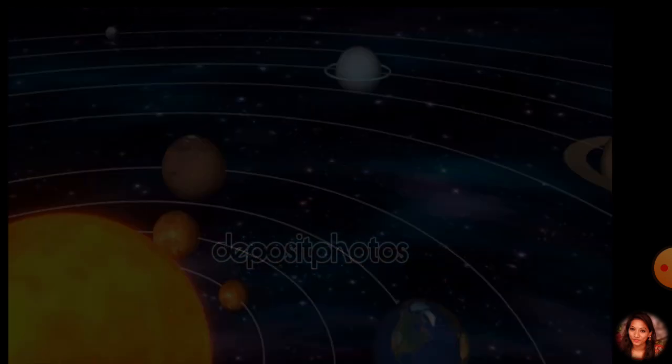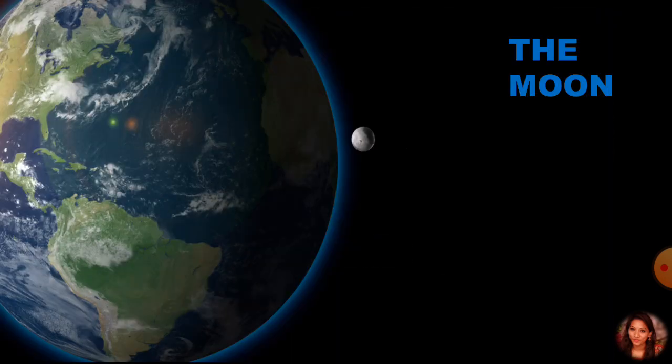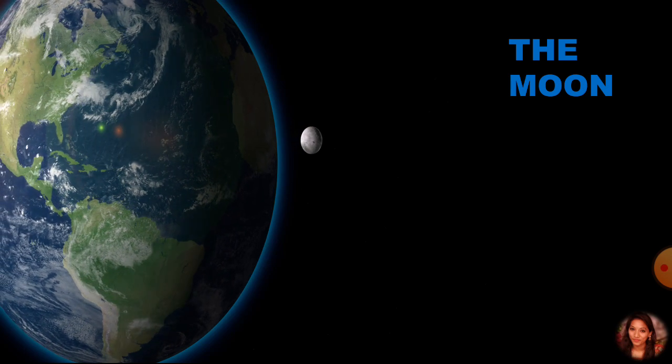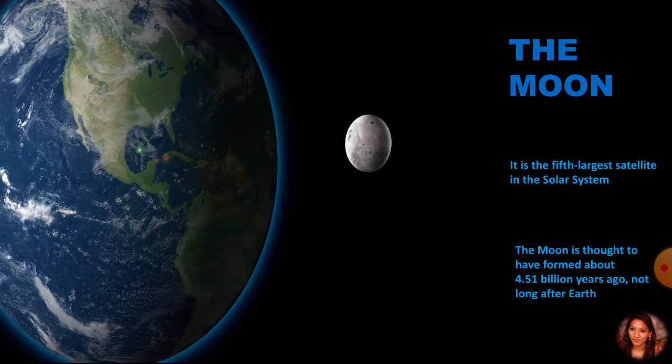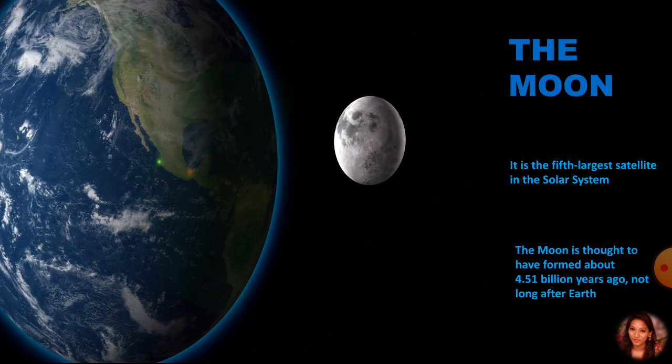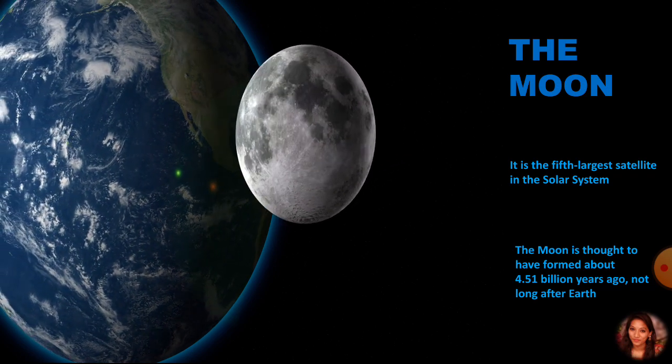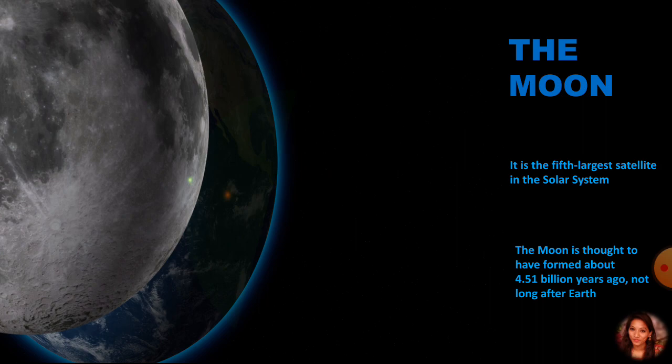First, we will start with the Moon. Some planets are known to have moons or satellites revolving around them. Any celestial body revolving around another celestial body is called a satellite. The Moon is the fifth largest satellite in the solar system and is thought to have formed about 4.51 billion years ago, not long after the Earth.